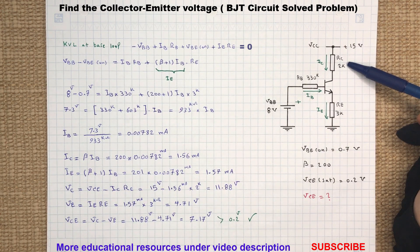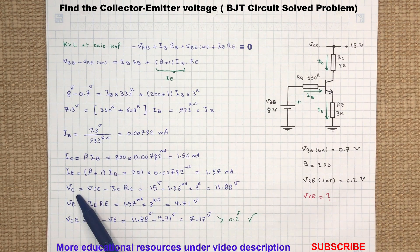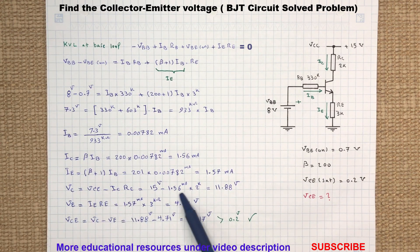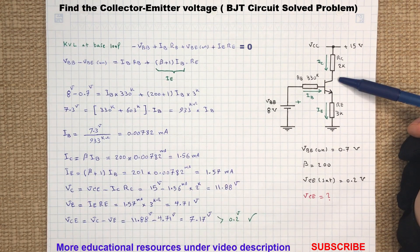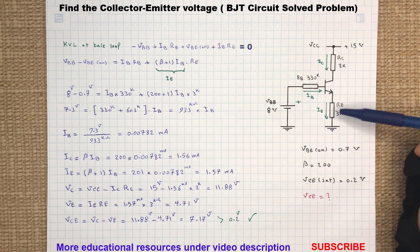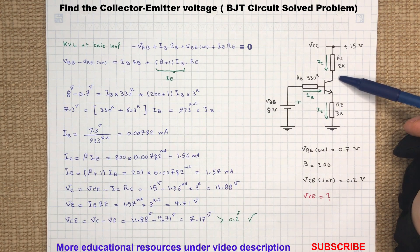Remember the collector voltage VC is the voltage at the collector node with respect to the common ground or reference point, and it is different than the voltage across the resistor RC.